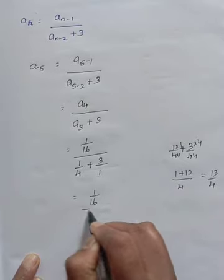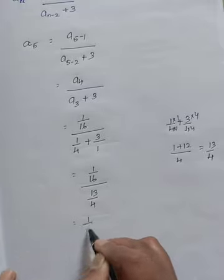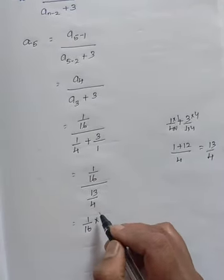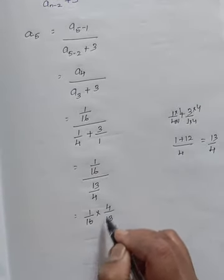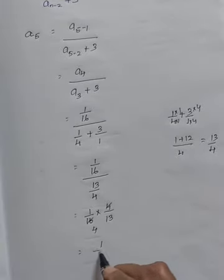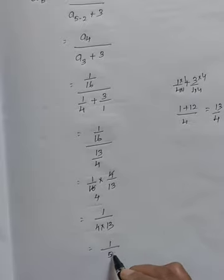Let us substitute this value in the denominator. 1 by 16 divided by 13 by 4. 1 by 16, division will become multiplication. The denominator will become reciprocal, 13 by 4 becomes 4 by 13. So 4 divides 16, 4 times. So 1 divided by 4 into 13, that is 1 by 52.